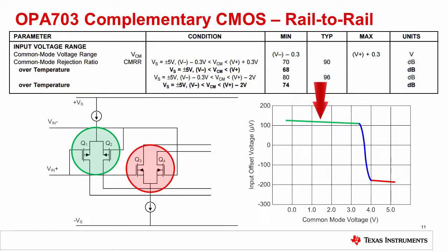The green region shows the VOS when the p-channel input pair is active, for the common mode voltages between minus 0.3 and 3.5 volts. The p-channel pair has an offset of about 100 microvolts. The red region shows the VOS when the n-channel input pair is active, for common mode voltages between 4 and 5 volts. The n-channel pair has an offset of about minus 200 microvolts.